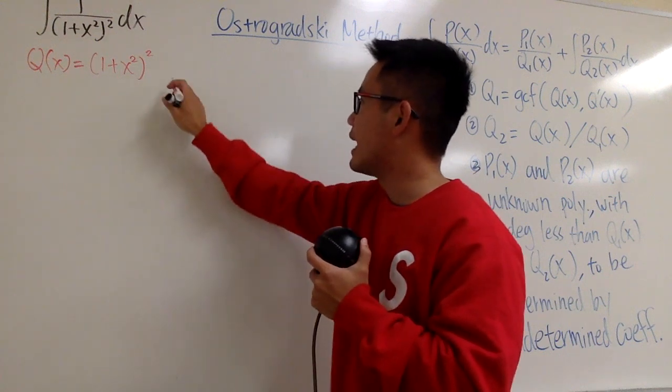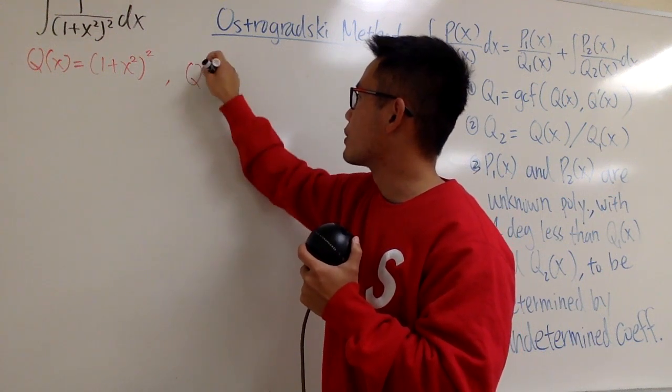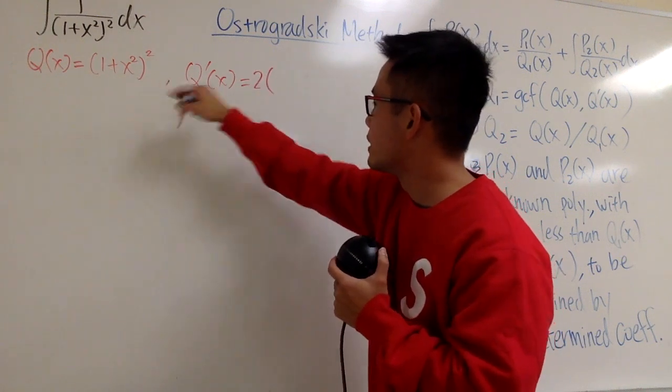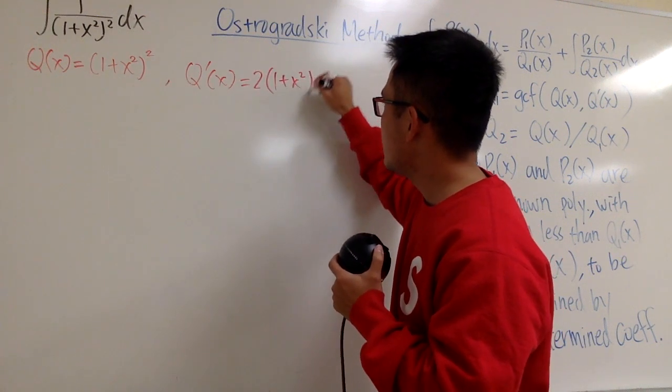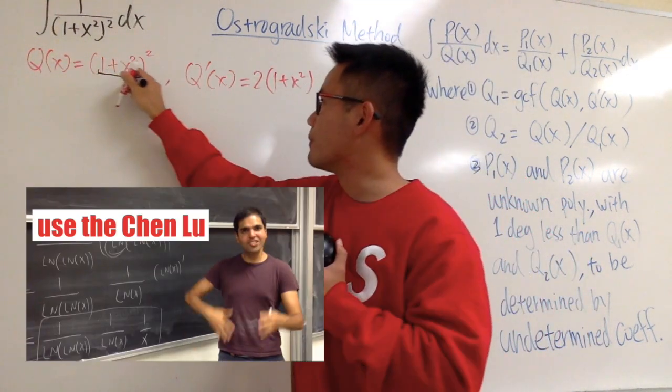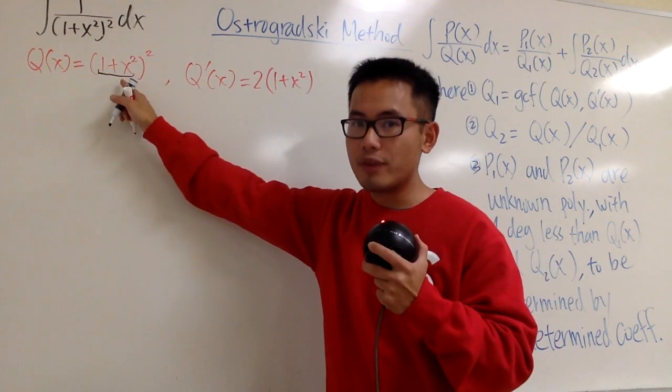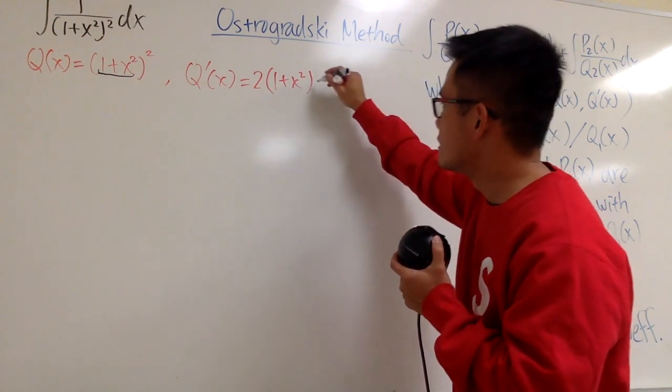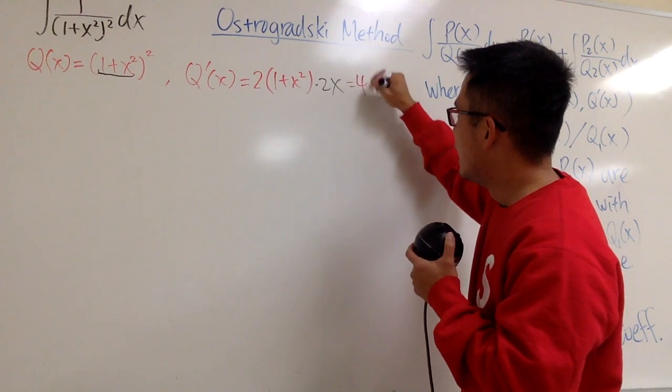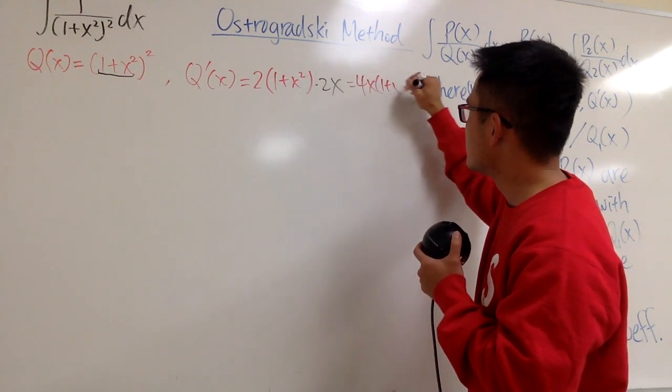So, just differentiate this guy the usual way. Therefore, q prime of x, you see that, bring the 2 to the front, so 2 times 1 plus x squared, and then you subtract 1 from the exponent, and don't forget the chain rule. Use the chain rule to multiply by the derivative of 1 plus x squared, and that is 2x. So you see, this is just 4x times 1 plus x squared.